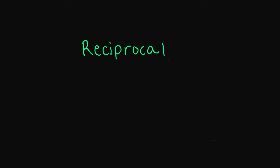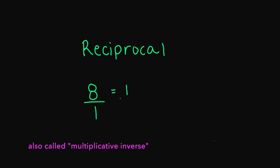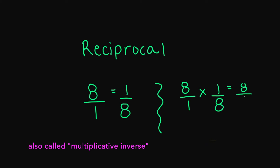One of the key takeaways for dividing fractions is you need to understand the word reciprocal. Any number multiplied by its reciprocal equals one. It's just taking the inverse or the opposite of that number. For example, the reciprocal of eight over one is going to equal one over eight, because if I multiply eight over one times one over eight, eight times one gives us eight in the numerator, and one times eight in the denominator gives us eight. Eight divided by eight is one.